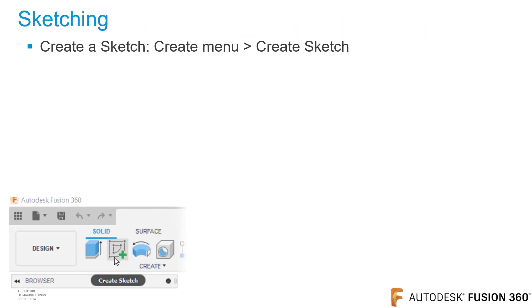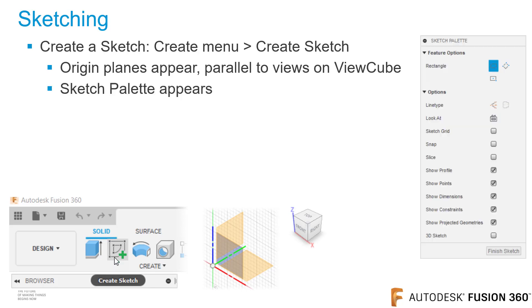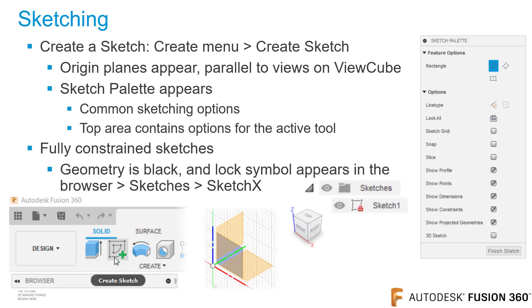To create a sketch, go to the Create menu and click on Create Sketch. The origin planes will appear — these planes are parallel to the views on the view cube — and the sketch palette will also appear. The sketch palette contains common sketching options, and the top area contains options for the active tool. When the sketch is fully constrained, all the geometry will turn black, and in the browser you'll see a lock symbol to the left of the sketch.